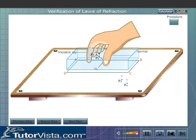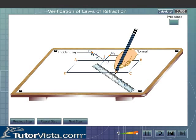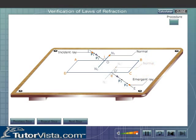Remove the glass slab and the pins. Mark the pin points P1, P2, P3, and P4. Join P3 and P4 to represent the emergent ray O-E.